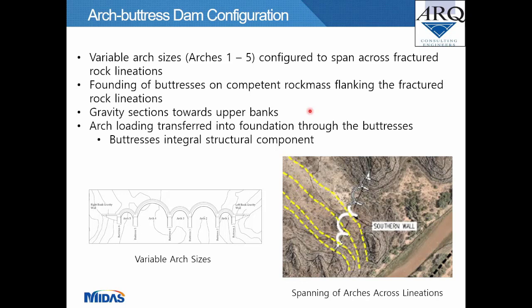The arch buttress dam configuration comprises variable arch sizes. Arches 1 to 5 were configured to span across the fractured rock lineations. Buttress foundations were designed to be placed on competent rock mass flanking the fractured rock, and gravity sections were designed for the upper banks. Arch loading is transferred into the foundation through the buttresses, making the buttresses the integral structural component. Images show the CAD model of the dam overlaid on local contours and fractured rock lineations, clearly showing the arches spanning across them.